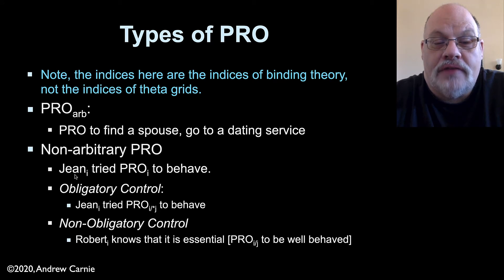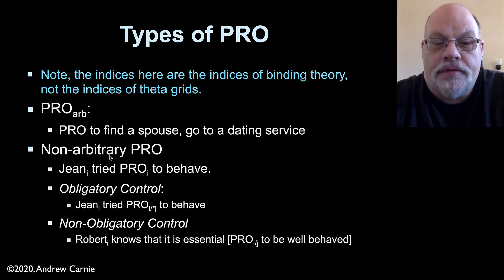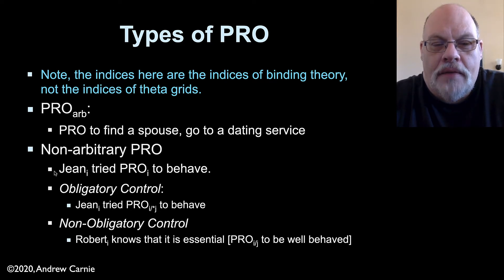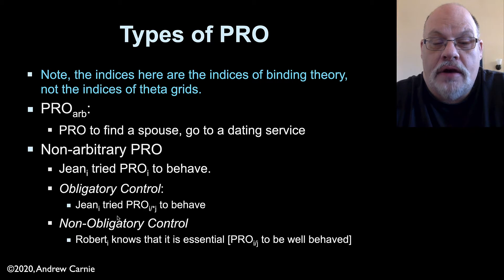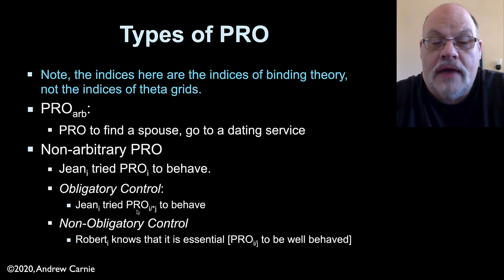Non-arbitrary pro shows up in sentences like 'Gene tried to behave.' Here, the pro must refer back to Gene, so it's not an arbitrary referent. It's referring back to another DP in the sentence, just like anaphors and pronouns could do. Among non-arbitrary pro, there are two varieties. The first is called obligatory control. Obligatory control holds when there must be a co-indexing between the pronoun and some other argument in the sentence. In 'Gene tried to behave,' pro can only refer to Gene — it can't refer to somebody else. Gene has to be the one behaving. So that's obligatory control.